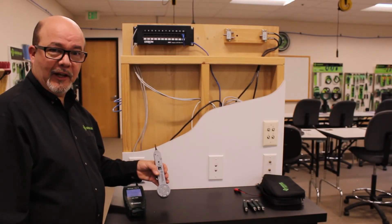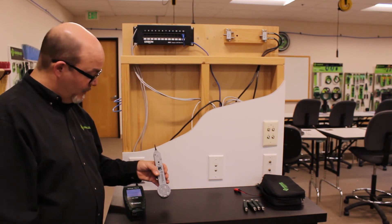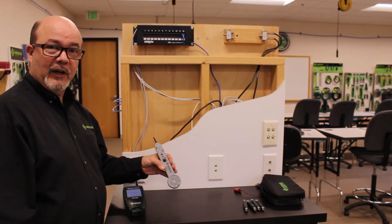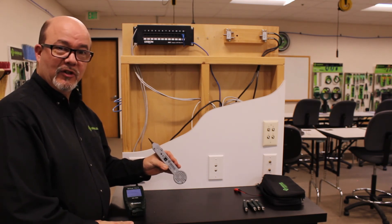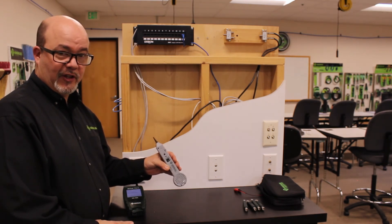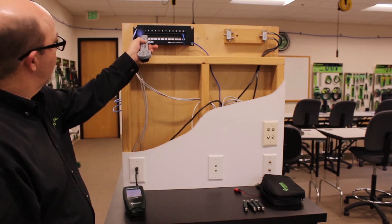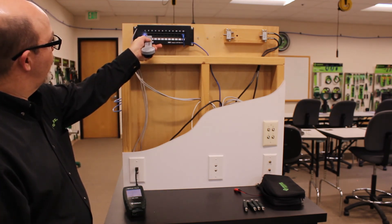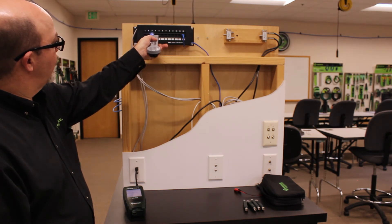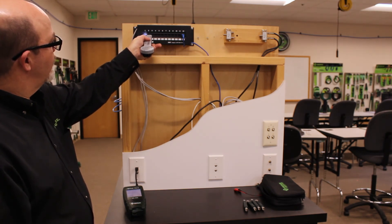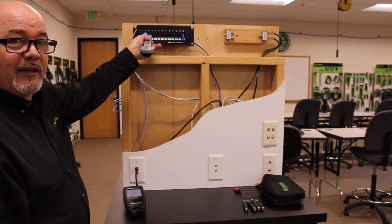To locate where the cable is terminated at the patch panel, simply use a regular tone probe. For today's demonstration, we will be using a Greenlee Communications 200EP-G. Cable is terminated into port 2.